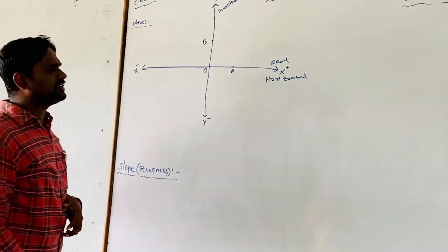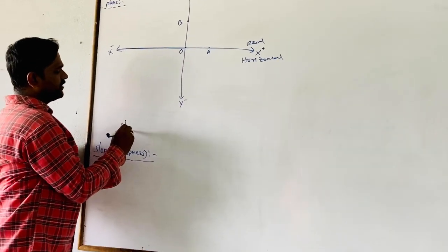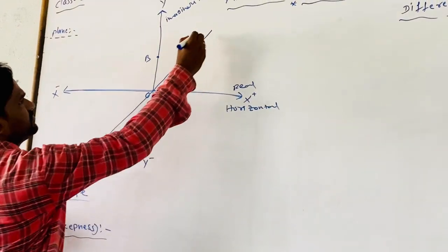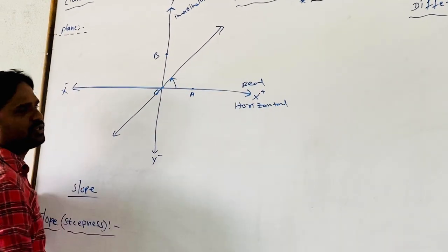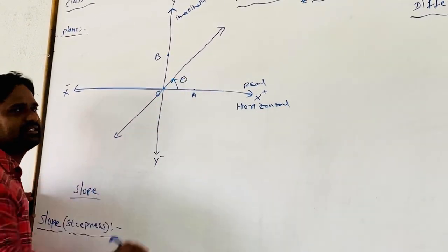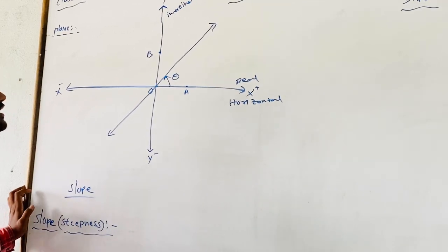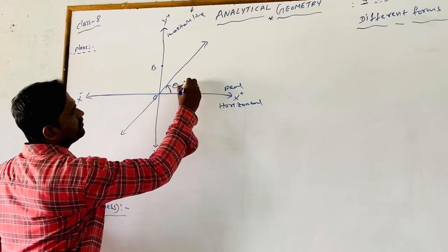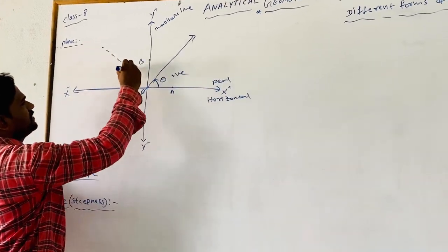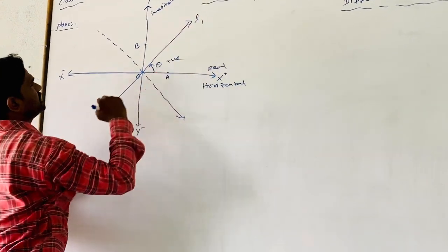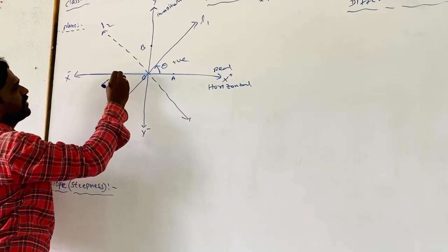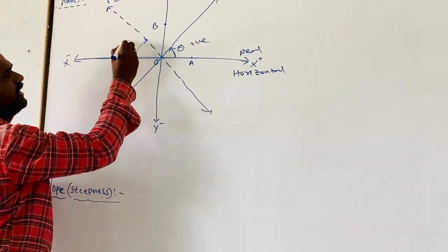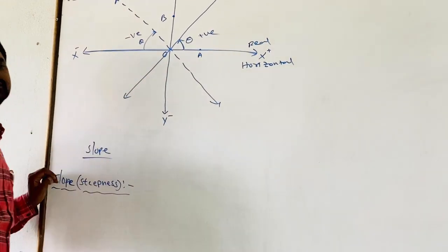The inclination of a line — what is inclination? Inclination means the slope of a line. If we take a line making some angle theta with respect to the x-axis, theta is known as the inclination. When the line makes an angle in the anti-clockwise direction, we choose that angle as positive. For another line L2 making an angle with the x-axis in the clockwise direction, its sign is negative. The same angle is indicated with theta.